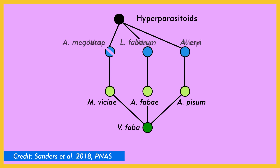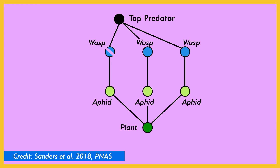Let's shorten some names. For the sake of this segment, we'll call the parasitoid wasps 'wasps' and call the hyper-parasitoid wasps the 'top predator.' So now we have a plant, some aphids, some wasps, and a top predator. Since there's only one species of wasp that eats each species of aphid, there is no trophic redundancy in this setup — each species only does one job. In the grocery store version of this, there aren't any substitutes if the cashier dips out.